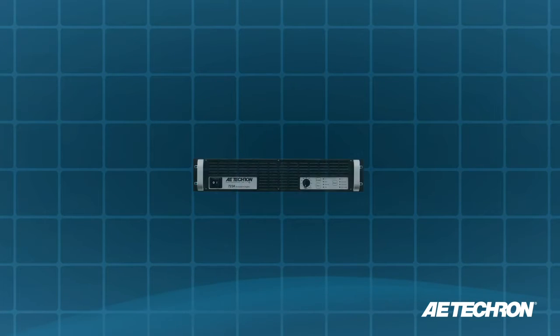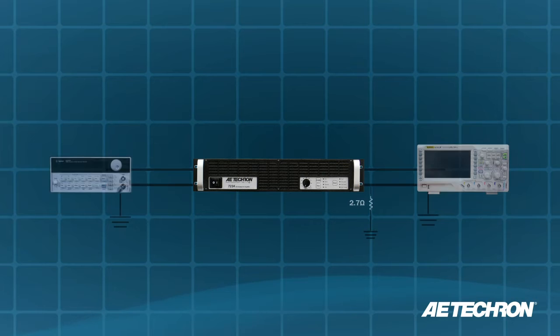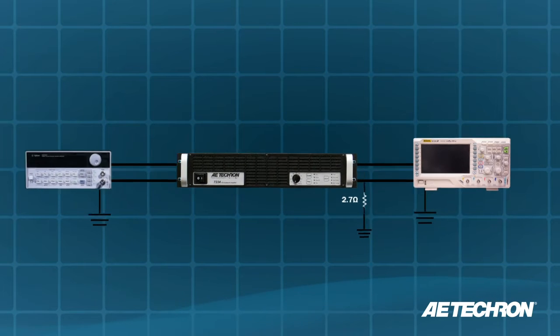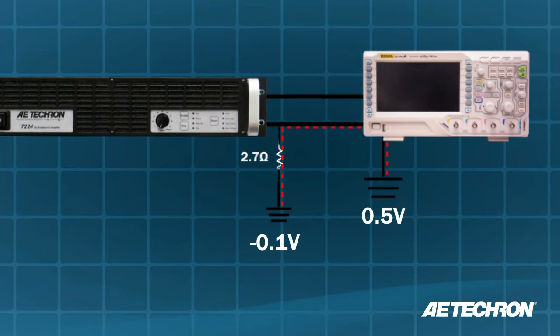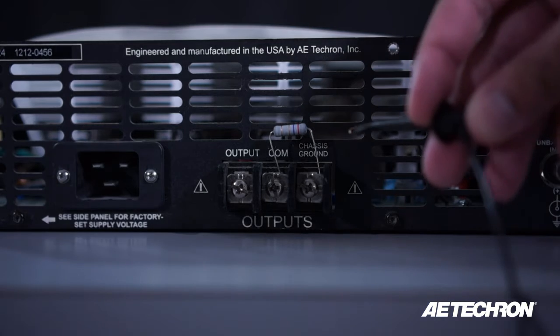When using an industrial amplifier as part of a system, ground loops are of great importance. For the safety of personnel and equipment, system ground loops should be avoided, and precautions should be taken to prevent them from occurring.